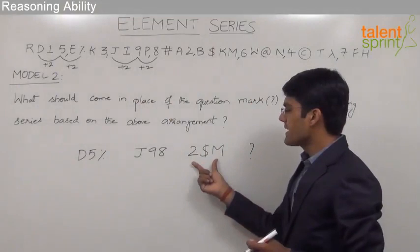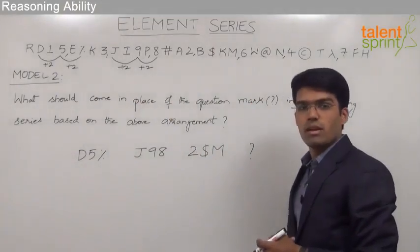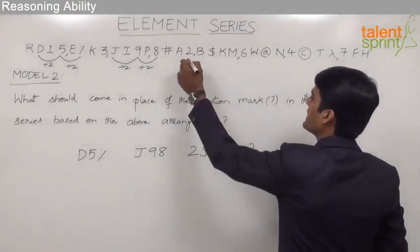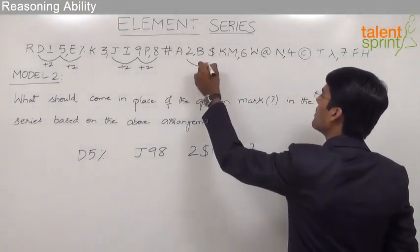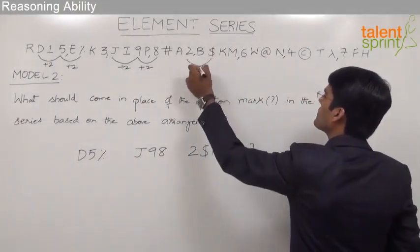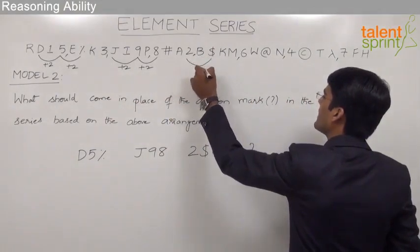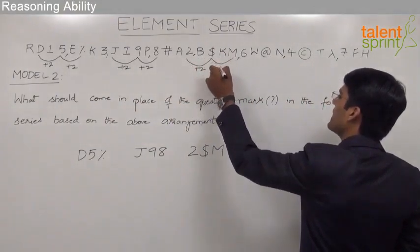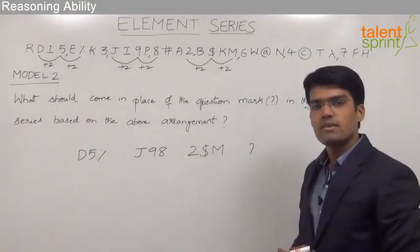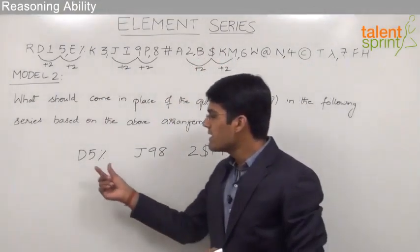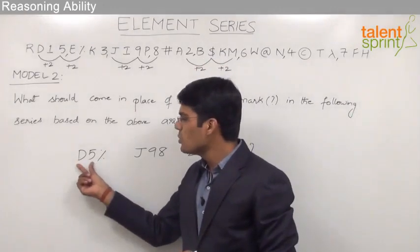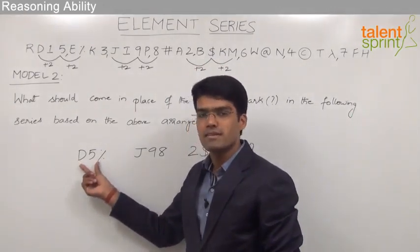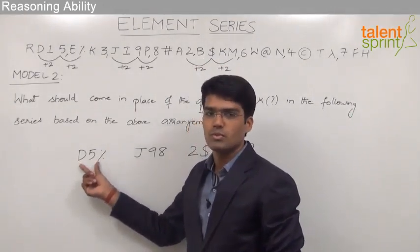Similarly, in the third set — 2, $, M — 2 is the starting element, two positions away is dollar, and two positions away is M. So very clearly, the distance between two consecutive elements in any of the given triplets is always 2.